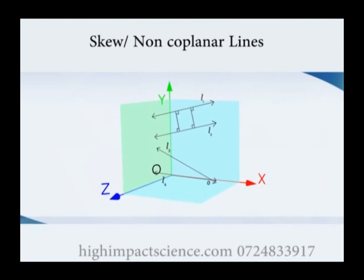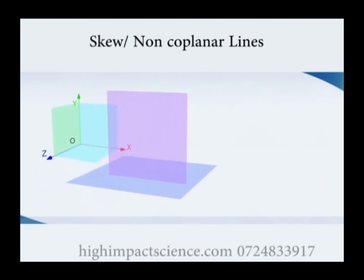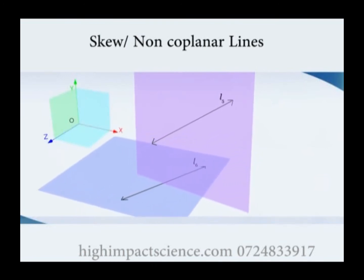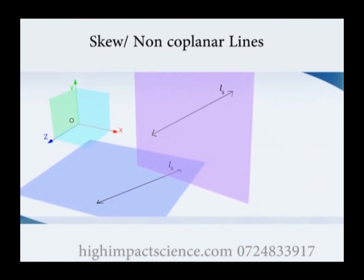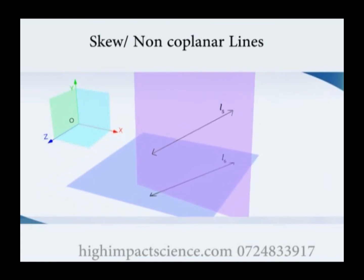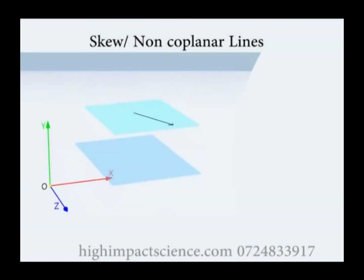However, in space, there are lines which are neither parallel nor intersecting. Such lines are called skew lines. Skew lines always belong to different planes, and so they are also called non-coplanar lines. Although skew lines never intersect, they form an angle between them since they are not parallel. To find the angle formed by skew lines, one of the lines must be translated.